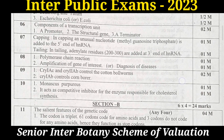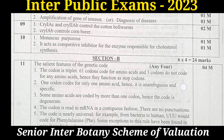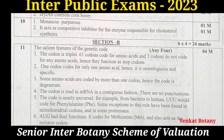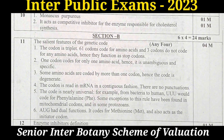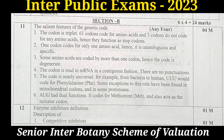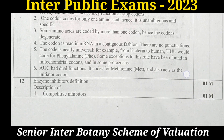The next question asks about the important features of the genetic code. There are 6 features of genetic code. Any four of these features in your answer gives 4 marks. So students, write any four features carefully.